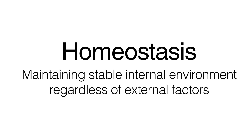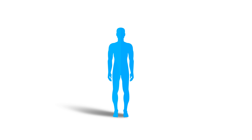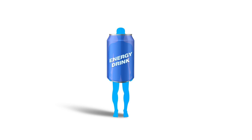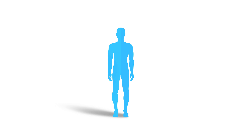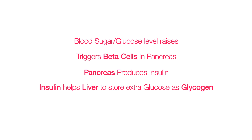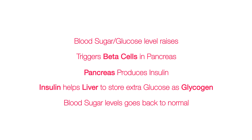Another example of homeostasis is our body's response to extra glucose. When we consume a full can of energy drink, we are supplying our body with way too much sugar than it needs, which results in a rise in blood sugar or glucose levels. This triggers the beta cells in the pancreas, which produces insulin. Insulin helps the liver cells to absorb the extra glucose and store it as glycogen, thus bringing the blood sugar levels back to normal.